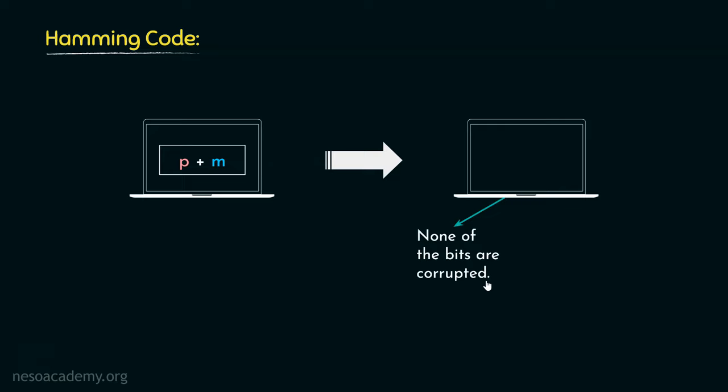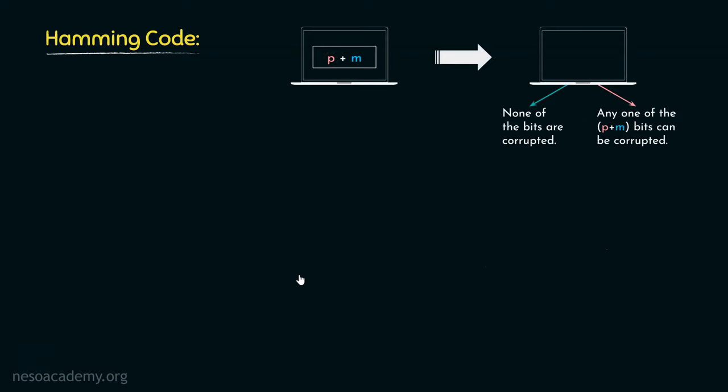One: none of the bits are corrupted, meaning this entire piece of data got received as it was. Now since we are talking about single bit errors, the second type of scenario can be that any one of the p plus m bits can be corrupted. So basically, from this p plus m bits of data, any one of the bits can be corrupted.